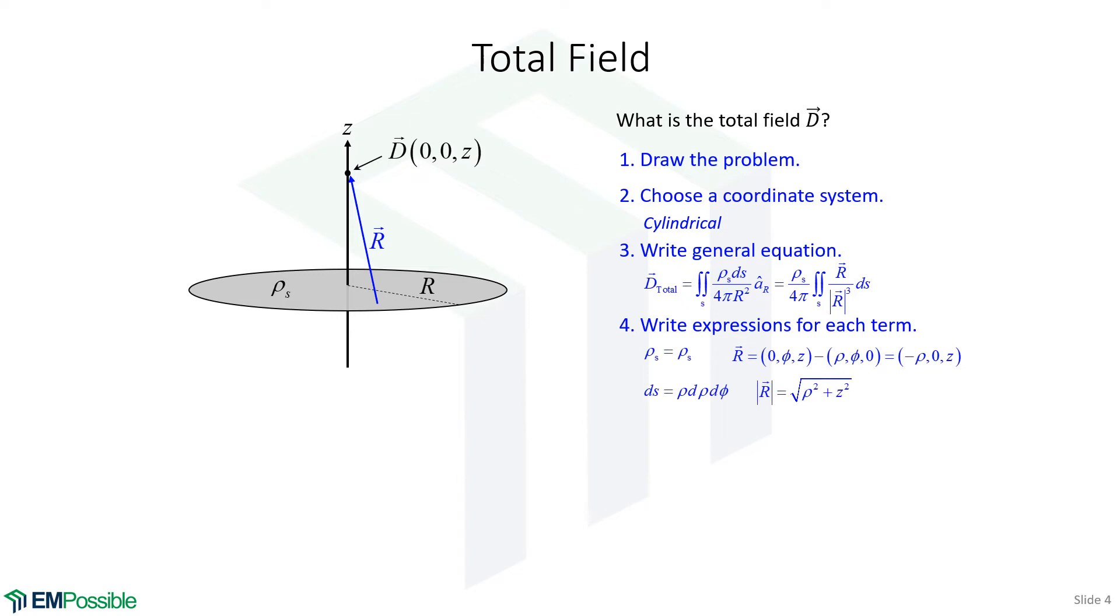The magnitude of that r vector, if I look at what the r vector is, then I know it's minus rho squared, or just rho squared, plus z squared. So we plug all of that stuff back into the integration. We have our vector r, we have the magnitude of that vector r cubed, we have our d s, and we have our constants to the outside, and we're choosing our limits of integration now.